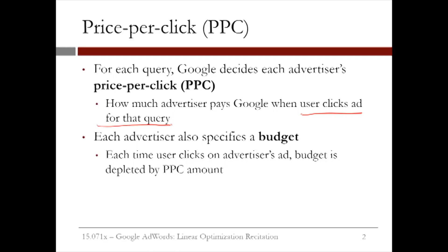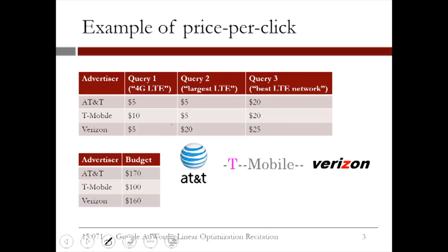Each advertiser also specifies a budget. This is the total amount of money that the advertiser has available to pay for all the clicks to their ad. Every time a user clicks on the advertiser's ad, the advertiser's budget is depleted by the price per click for that ad and for that user's query. Let's illustrate this with a small example.